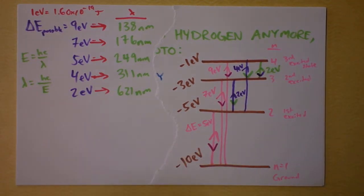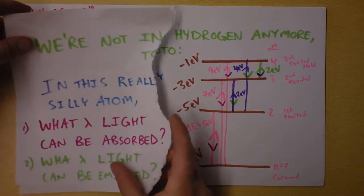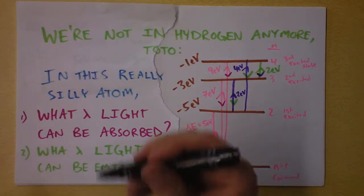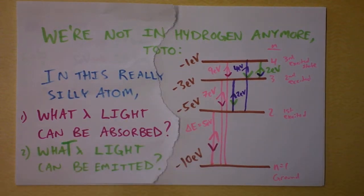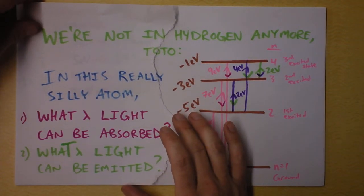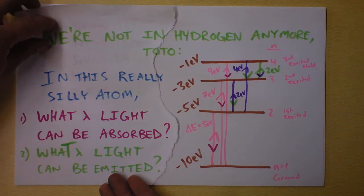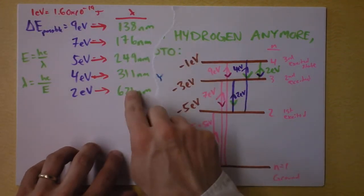If the other question is - what was that other question? The other question is, what wavelength light can be emitted? And the answer to that question is exactly the same wavelengths of light that can be absorbed. These wavelengths right here.